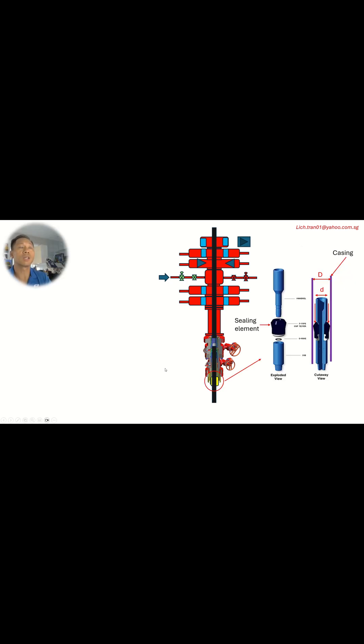About casing cup tester, similar in here, if you close the upper pipe ram in here and you pump into the kill line here, you apply the pressure and the pressure will be acting against the cup tester all the way down here.